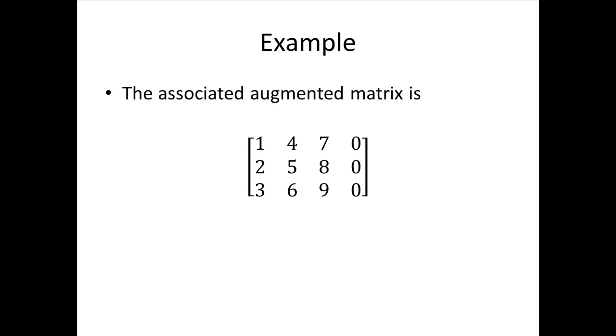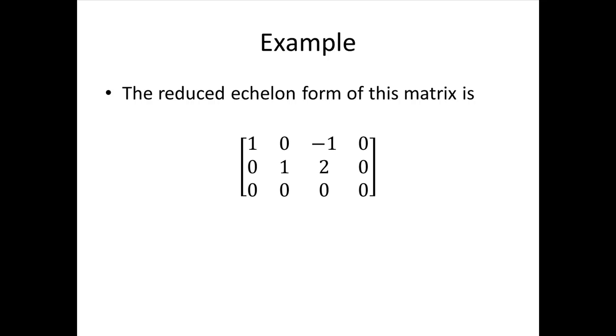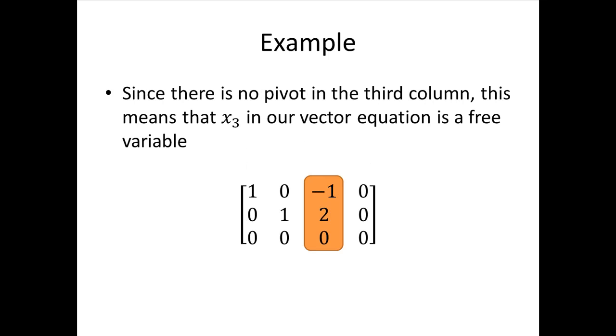We set up our associated augmented matrix, and we row reduce it. When we row reduce it, we get something like this. And what we notice is that the third column of this matrix does not have a pivot. There's no pivot in that third column. And that means that in our original vector equation, x3 is a free variable.